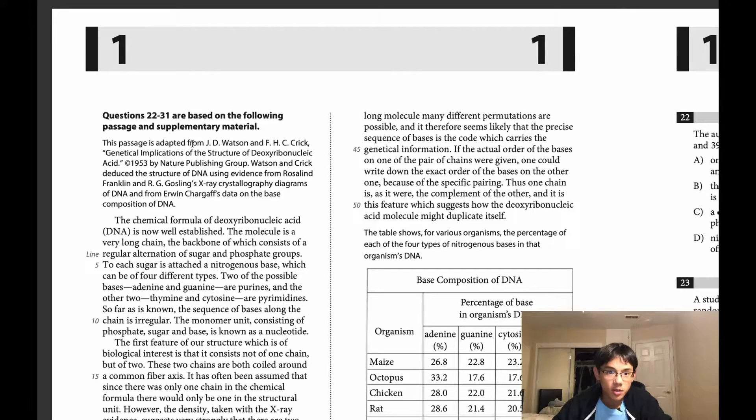This passage is adapted from J.D. Watson and F.H.C. Crick, Genetical implications of the structure of deoxyribonucleic acid, so DNA. Watson and Crick deduced the structure of DNA using evidence from Rosalind Franklin and R.G. Gosling's X-ray crystallography diagrams of DNA and from Erwin Chargaff's data on the base composition of DNA.